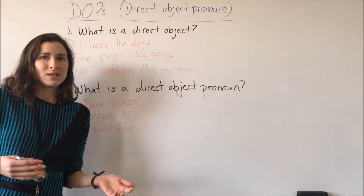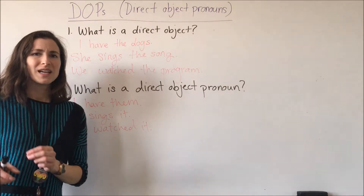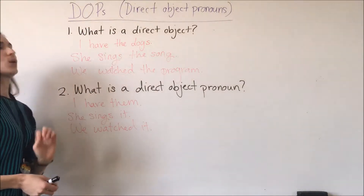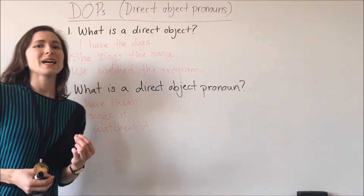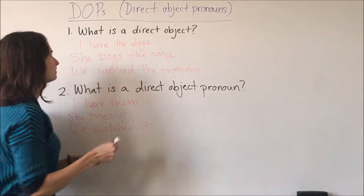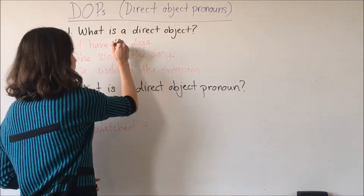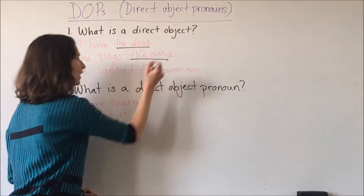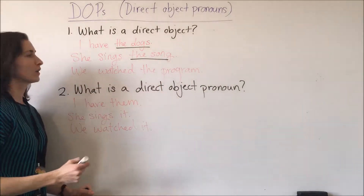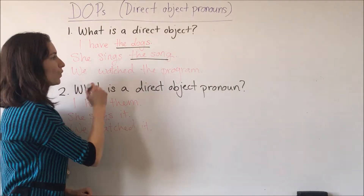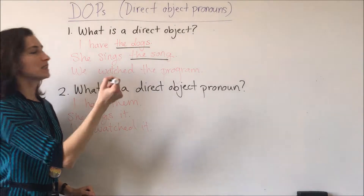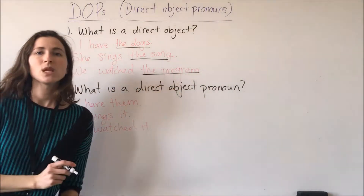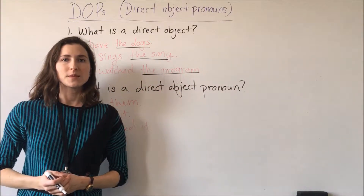What was verbed? What is being verbed? When I say verbed, I mean: what is had? The dogs. What is sung? The song. What is or what was watched? The program. So those are our direct objects.